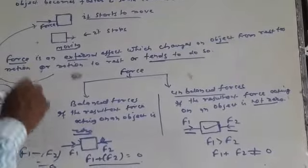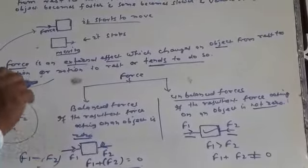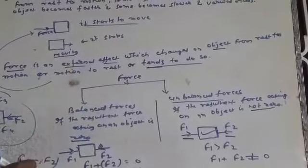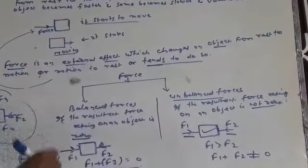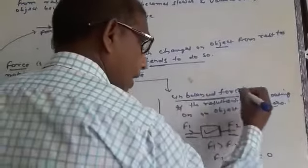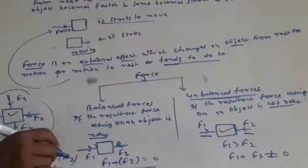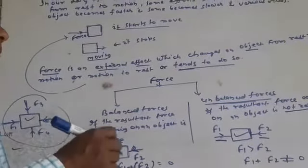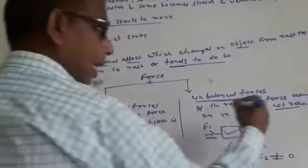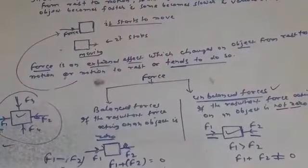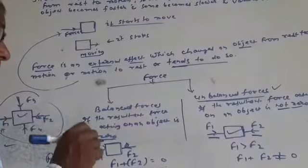This means under the effect of balanced force, there is no chance to move an object. Or if any object is moving in uniform motion, there is no chance to bring the object at rest. But under the effect of unbalanced force, any object may come from rest to motion or motion to rest. Speed may be increased, speed may be decreased. So unbalanced force is more effective in our daily life. So these are two types of forces, balanced and unbalanced.